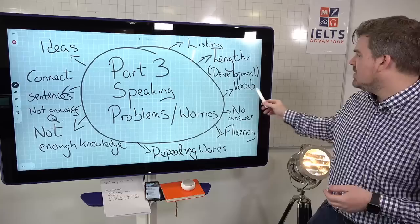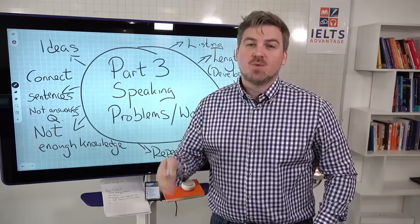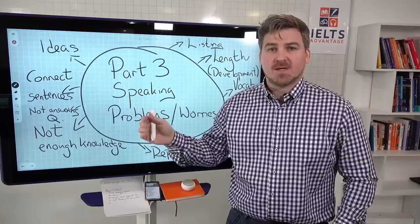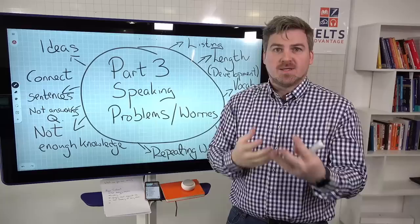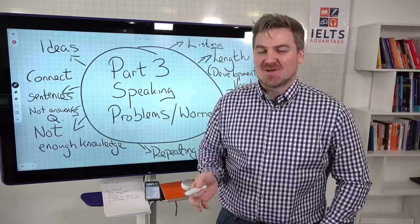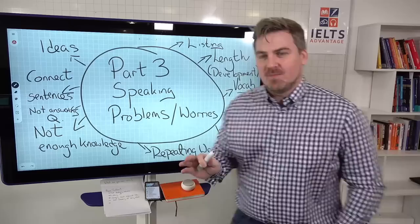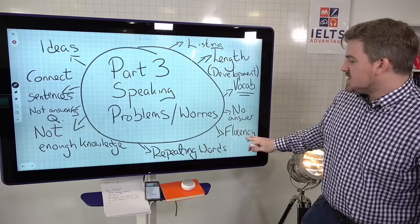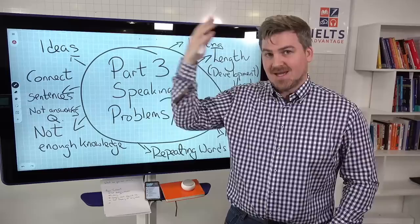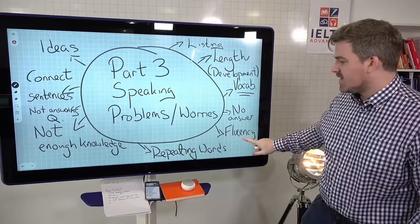Vocabulary is obviously something examiners listen for — it's 25% of your total mark. The main worry a lot of students have with part three is not having enough topic-specific vocabulary. A topic might come up that they know nothing about and they worry they don't have enough vocabulary. No answer at all is also a problem — a lot of part three questions will actually be difficult, but you should always try and attempt some sort of answer. Fluency can also be affected because people are thinking too much about content — the ideas, the explanations, the examples — and that overthinking affects fluency.